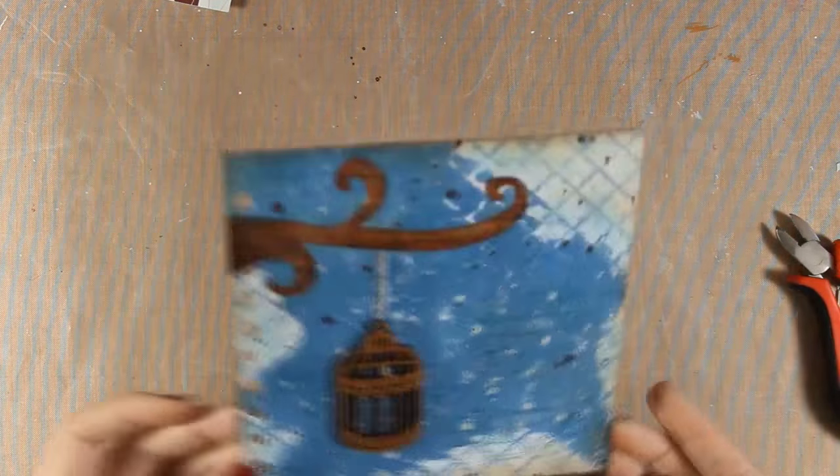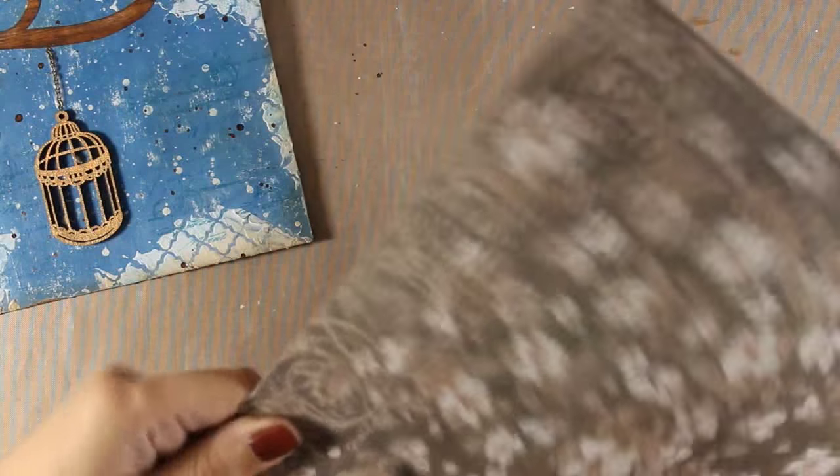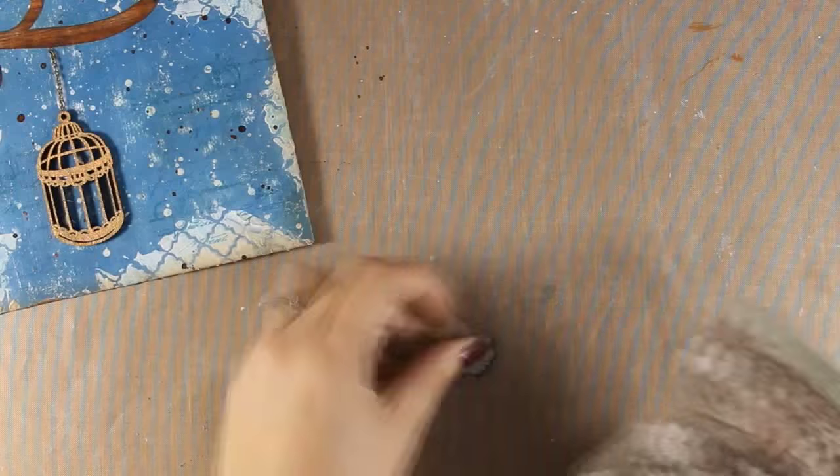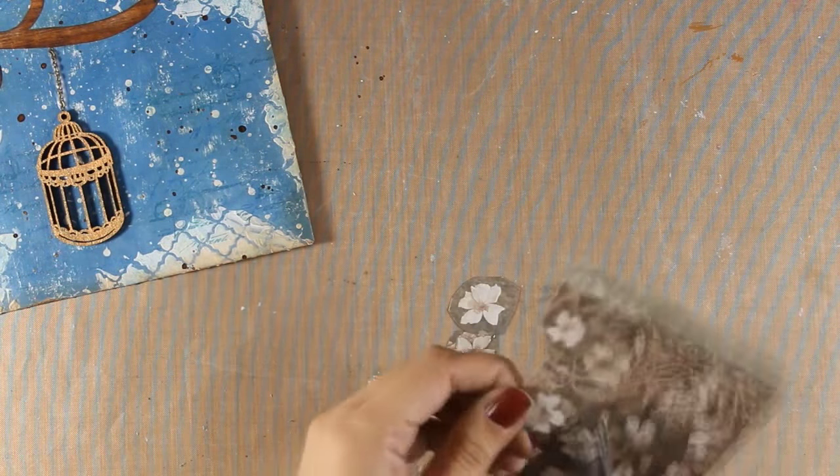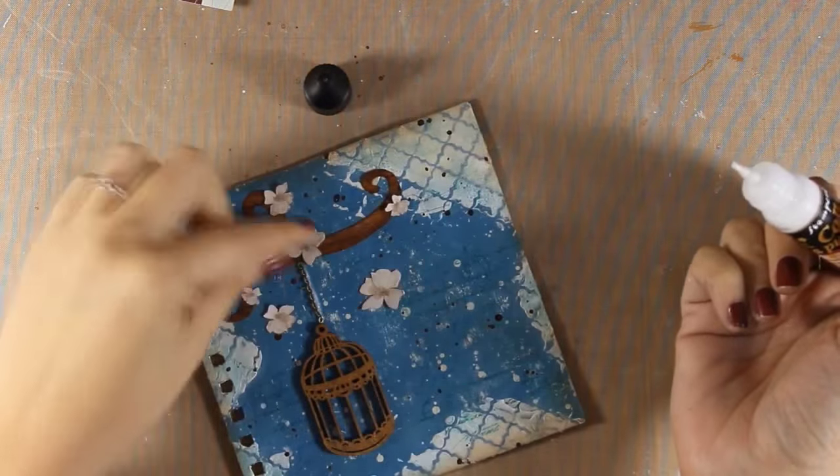I also need a few flowers for my branch so I am going to bring in this Stamperia scrapbooking paper and with my scissors I am going to fuzzy cut a few of the flowers. I am then going to stick them down on my branch just to create a few clusters and add some interest. Of course at this stage you can always use sticker flowers or if you have a punch you can punch out flowers or anything you really like.